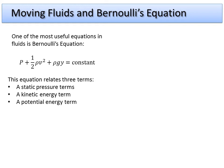Like we dealt with conservation of energy and conservation of momentum, when we see something that gives a constant, it means the equation works for every point along a path. So if we know the initial conditions, we know that there has to be a similar set of three values for the final state.